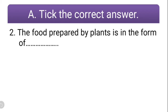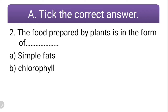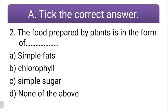Question number two: the food prepared by plants is in the form of — options: simple fats, chlorophyll, simple sugar, or none of the above. How do they store their food? The food prepared by the plant is in the form of simple sugar. So the correct option is C.